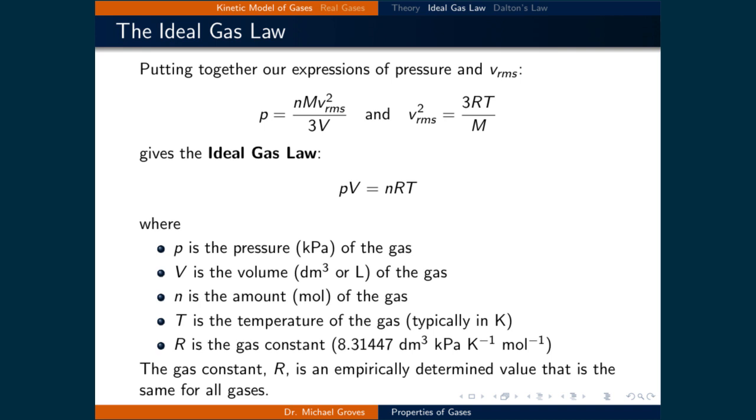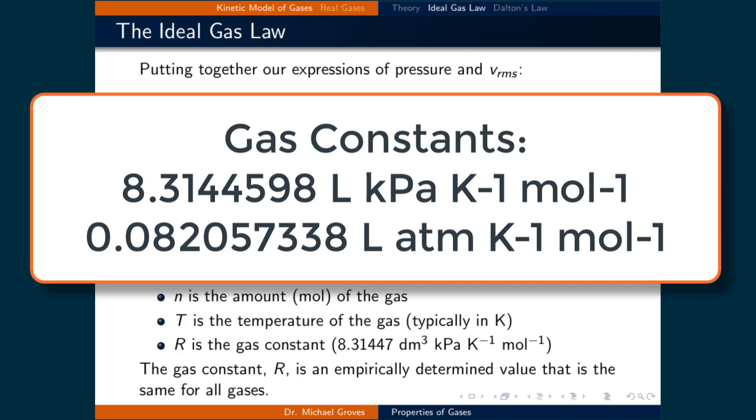Pay very close attention to the units of the value of the gas constant you use when performing calculations. Using the wrong value of R is a common mistake when solving problems, and it depends on the units of the other values plugged into the ideal gas law. Pay special attention to the units of the pressure, since it will typically be expressed in either kilopascals or atmospheres, and both have their own gas constant.